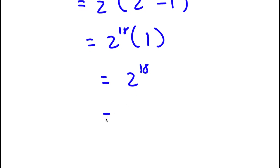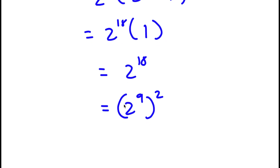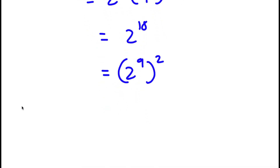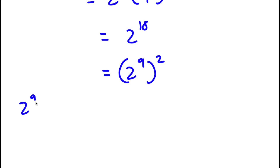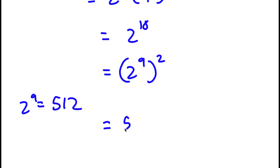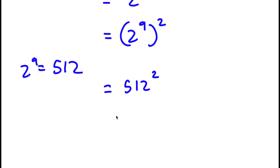2 to the power of 18 is just the same thing as 2 to the power of 9, to the power of 2. And 2 to the power of 9, as most of you probably know, is 512. So this is the same thing as 512 to the power of 2.